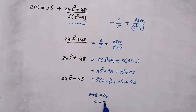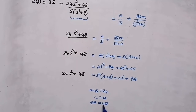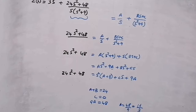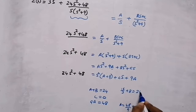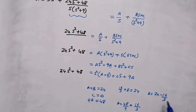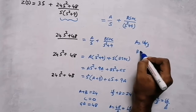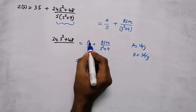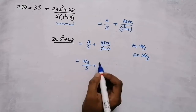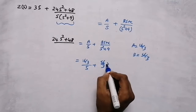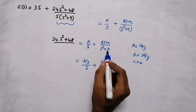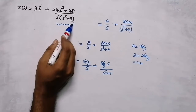Comparing constant terms: 9A equals 48, giving A equal to 16/3. Substituting back: 16/3 plus B equals 24, so B equals 24 minus 16/3, which equals 56/3. So A equals 16/3 and B equals 56/3. Substituting into the partial fraction: (16/3)/s plus (56/3)s divided by (s squared plus 9). This splits the impedance into three terms Z1, Z2, and Z3.